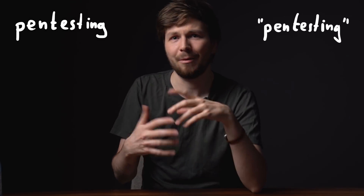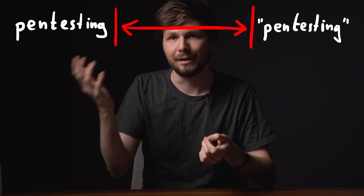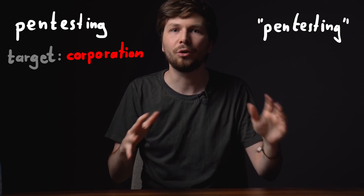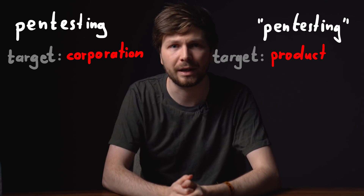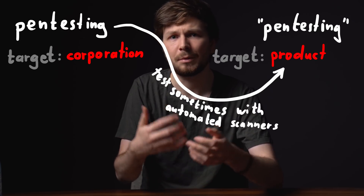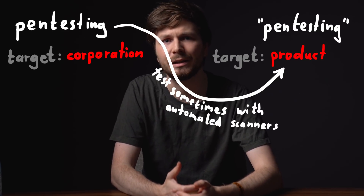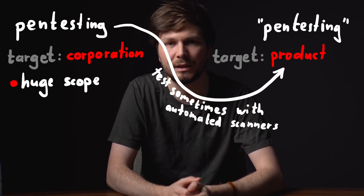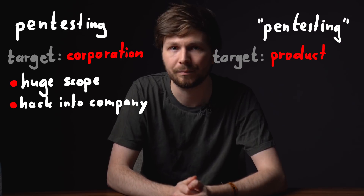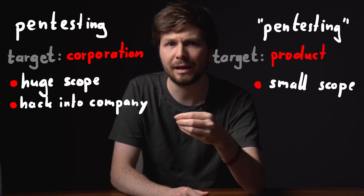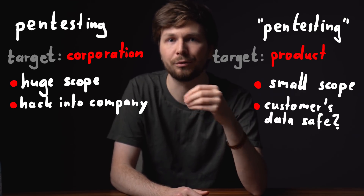The report includes conclusions and how we feel about the overall state of security of this particular application. As you can see, this is very different from the other pen testing — I would even say they are on opposite sides. This pen testing targets a whole corporation, while my pen testing only looks at an individual application. The red teaming pen test might also look for vulnerabilities in the application, but mostly using automatic scanners like Nessus, and generally only briefly — they have a much larger scope and can't focus on details.